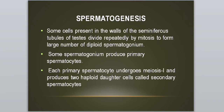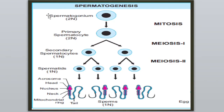ہر ایک primary spermatocyte meiosis one undergo کرتا ہے اور دو daughter cells produce کرتا ہے جنہیں secondary spermatocyte کہتے ہیں۔ Diagram میں clear کرتا ہوں: seminiferous tubules سے mitosis کے through large number of diploid spermatogonium بنتے ہیں (2N)۔ کچھ spermatogonium primary spermatocyte بناتے ہیں، پھر each primary spermatocyte meiosis one undergo کرتا ہے اور two haploid daughter cells produce کرتا ہے۔